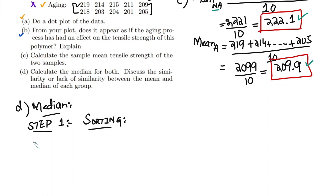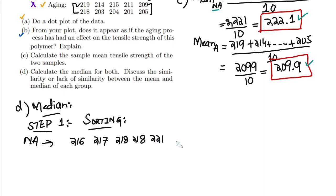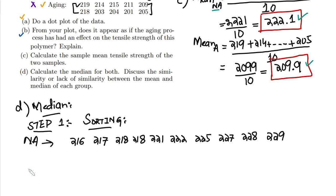Sorting the no-aging data — I have sorted it already — gives: 216, 217, 218, 218, 222, 222, 225, 227, 228, and the last one is 229. That is the sorted no-aging data.